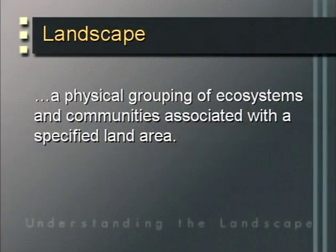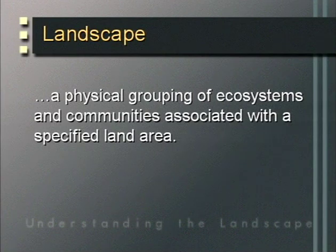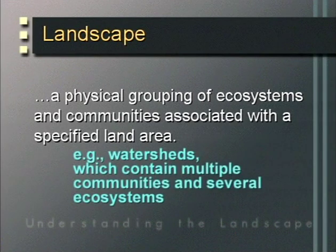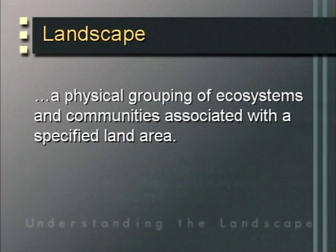The final level of biological diversity is the landscape level, which represents a physical grouping of ecosystems and communities associated with a specified land area. Watersheds are a good example — they typically contain multiple communities or several ecosystems. Private landowners and their actions directly and indirectly affect all levels of biological diversity. Most of this video will target the community, ecosystem, and landscape levels, at which most landowners operate.